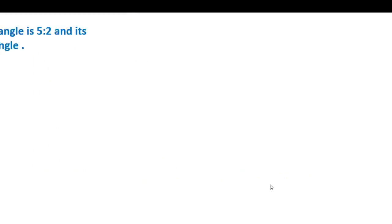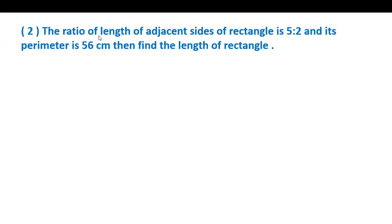Therefore the measures of the angles of the triangle are 30 degrees, 60 degrees, and 90 degrees. Now the second example: the ratio of the length of adjacent sides of a rectangle is 5 is to 2, and its perimeter is 56 cm. Find the length of the rectangle.